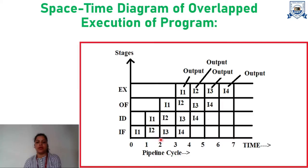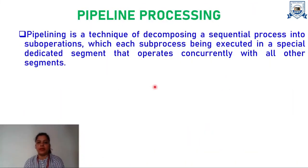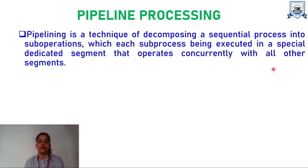In the same way, from time 2 to 3, you can observe three instructions are executing simultaneously. And at the end, we are getting the output of multiple instructions within a lesser frame of time. Pipelining is a technique of decomposing a sequential process into sub-operations, with each sub-process being executed in a special dedicated segment that operates concurrently with all other segments.